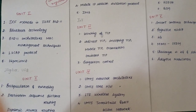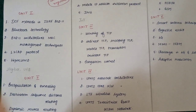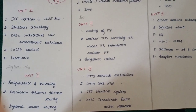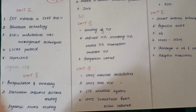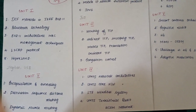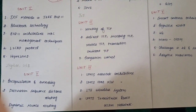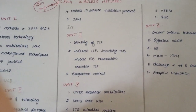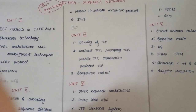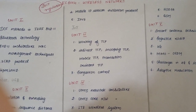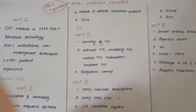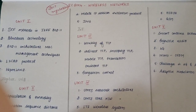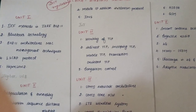Unit 2 topics: Encapsulation and tunneling techniques — encapsulation is very important. Next, Destination Sequence Distance routing protocol, Dynamic Source Routing protocol — very important. Next, Mobile IP, Session Initiation Protocol, and IPv6. These are common to both 2013 and 2017 regulations. Additionally, Internet of Things (IoT) is included in the 2017 regulation.